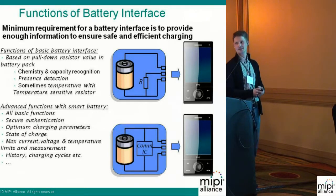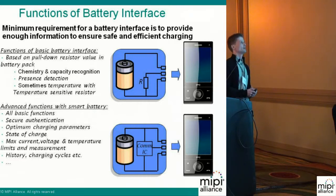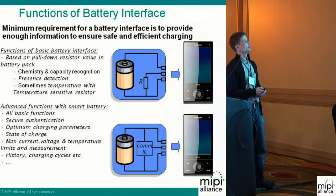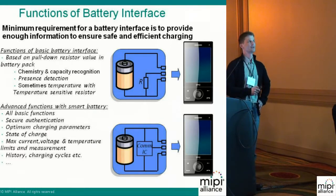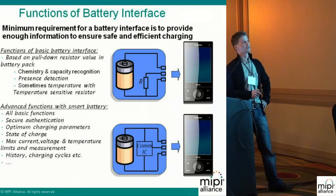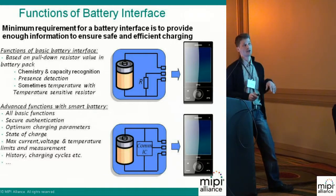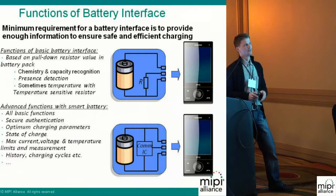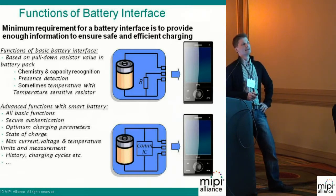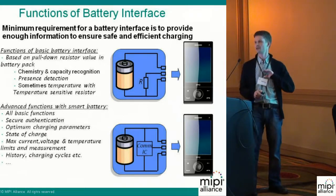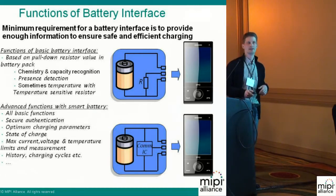It's very easy to counterfeit that. Another thing we need to do with the battery interface is check chemistry and capacity, because that defines your maximum charging current. You also need to know whether the battery is present or not. If you remove the battery, you have no power left to detect the removal, so it has to happen earlier — this is especially important when writing to memory cards or secure data using your SIM card.